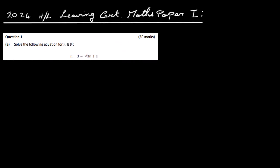Okay, so in this video I'm going to have a look at the 2024 Higher Level Leaving Cert Maths Paper 1, Question 1. So this is our first question here. Solve the following equation for n is a natural number. So we have n minus 3 is equal to the square root of 3n plus 1.